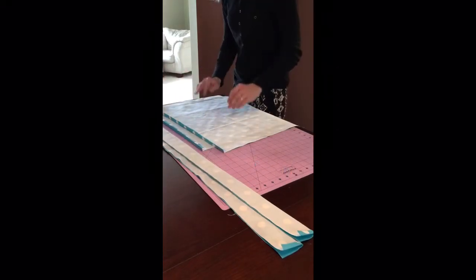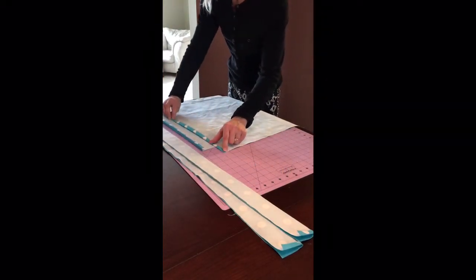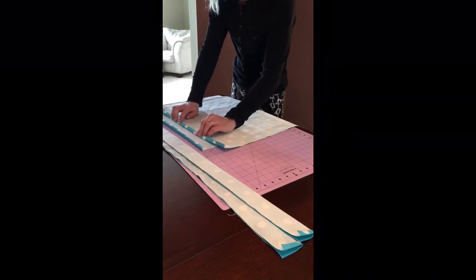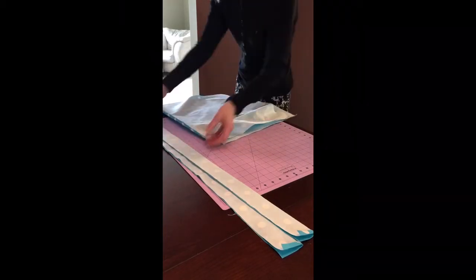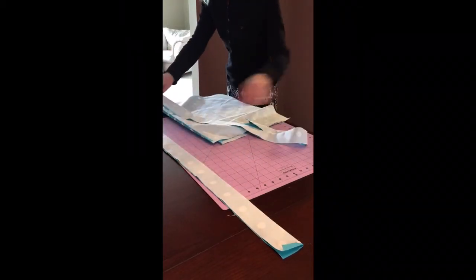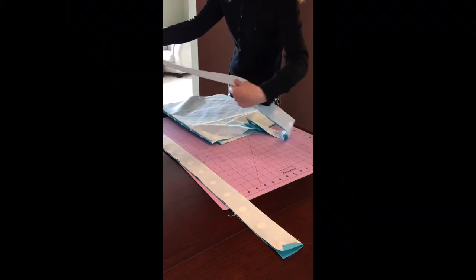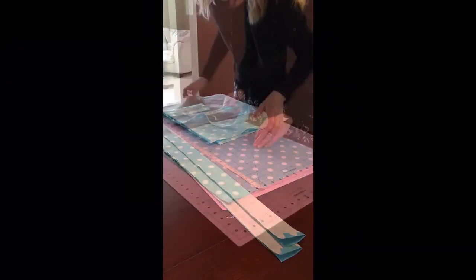The first thing we're going to do is put a seam in this top edge of the bag that we've pressed down, just to finish that edge. Then, the next thing I'm going to do is take the straps and do a seam down the outer edge, the open edge, about a quarter inch seam allowance. And then we'll turn those right side out.